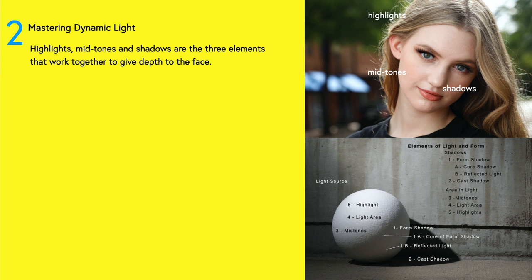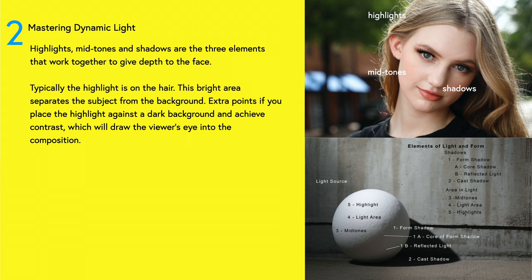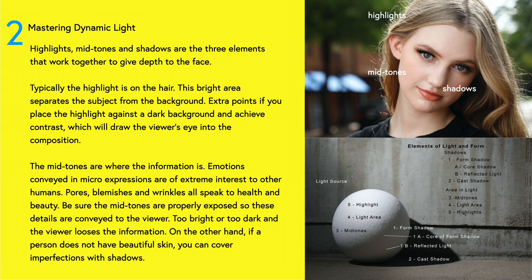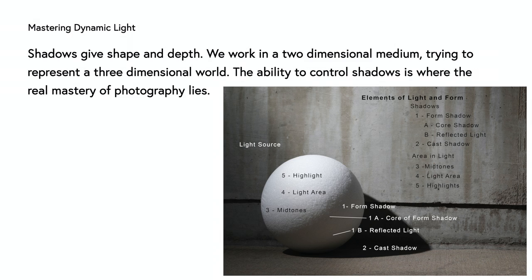Mastering dynamic light. Highlights, midtones, and shadows are the three elements that work together to give depth to the face. Typically the highlight is on the hair — this bright area separates the subject from the background. Extra points if you place the highlight against a dark background to achieve contrast, which will draw the viewer's eye into the composition. The midtones are where the information is; emotions conveyed in micro-expressions are of extreme interest to other humans. Pores, blemishes, and wrinkles all speak to health and beauty. Be sure the midtones are properly exposed so these details are conveyed to the viewer. Too bright or too dark and the viewer loses the information. If a person does not have beautiful skin, you can cover imperfections with shadows. Shadows give shape and depth. We work in a two-dimensional medium trying to represent a three-dimensional world — the ability to control shadows is where the real mastery of photography lies.